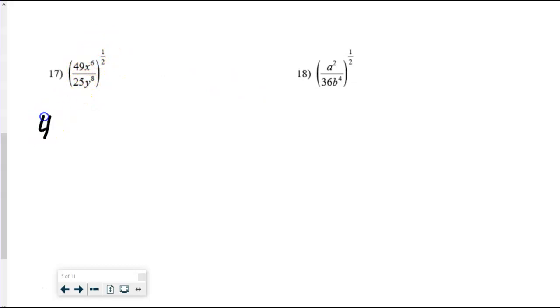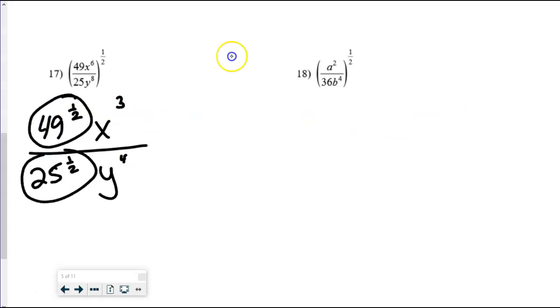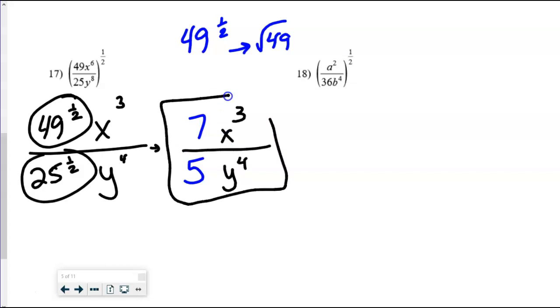All right. So here, one-half power. Well, everybody's going to get the one-half power, huh? So 49 to the one-half power, x to the third power, over 25 to the one-half power, and then y to the fourth. All right. So what I need you to remember, though, is what does the one-half power mean? Well, 49 to the one-half power is the same thing as saying the square root of 49. So that means the 49 to the one-half power becomes a 7. 25 to the one-half power becomes a 5. And then x to the third over y to the fourth are kind of good where they are. So that's not really a tricky question. You just have to remember that the one-half power is the same thing as a square root. And once you remember that, then you're good.